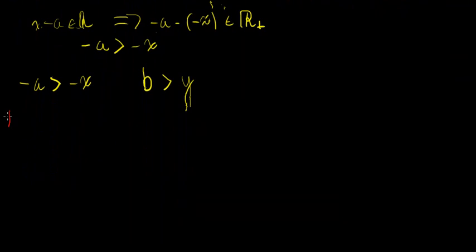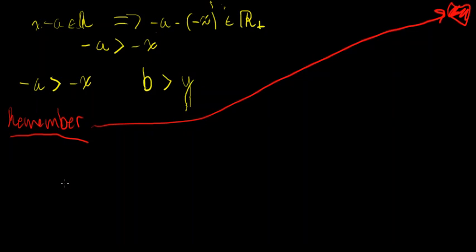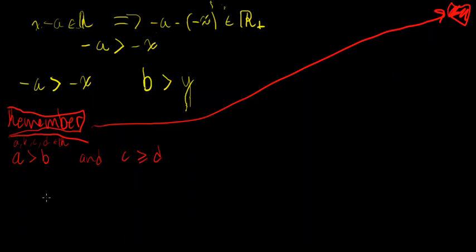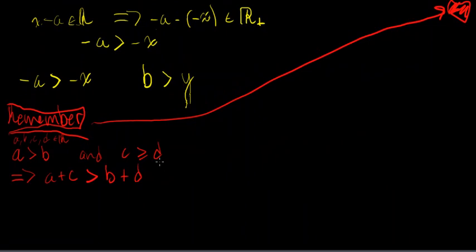I'm going to write another property in red. Remember: if A, B, C, and D are all in the real numbers, and A is strictly greater than B, and C is greater than or equal to D, then this implies that A plus C is strictly greater than B plus D. Don't take this property for granted — I encourage you to watch the linked video to see why this is true. But take my word for it now.